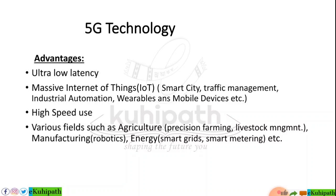5G enables massive Internet of Things — we can embed sensors, software, and other technologies into devices for connecting and exchanging data with other devices and systems. Applications include smart cities, traffic management, industrial automation, wearables, and mobile devices. With 5G technology, hundreds of IoT devices can connect simultaneously. Various fields benefit from 5G such as agriculture — precision farming and livestock management — manufacturing with robotics, and energy through smart grids and smart metering.